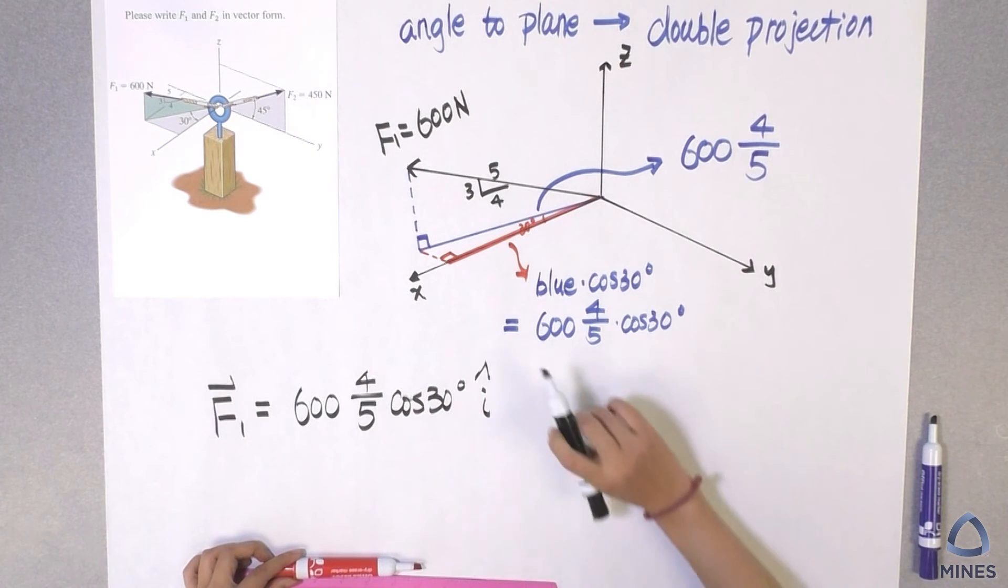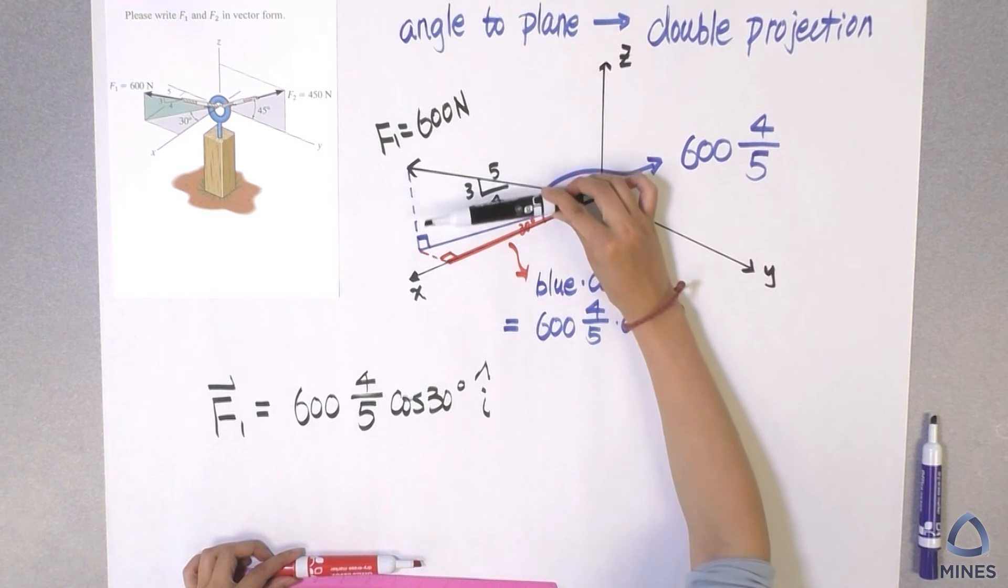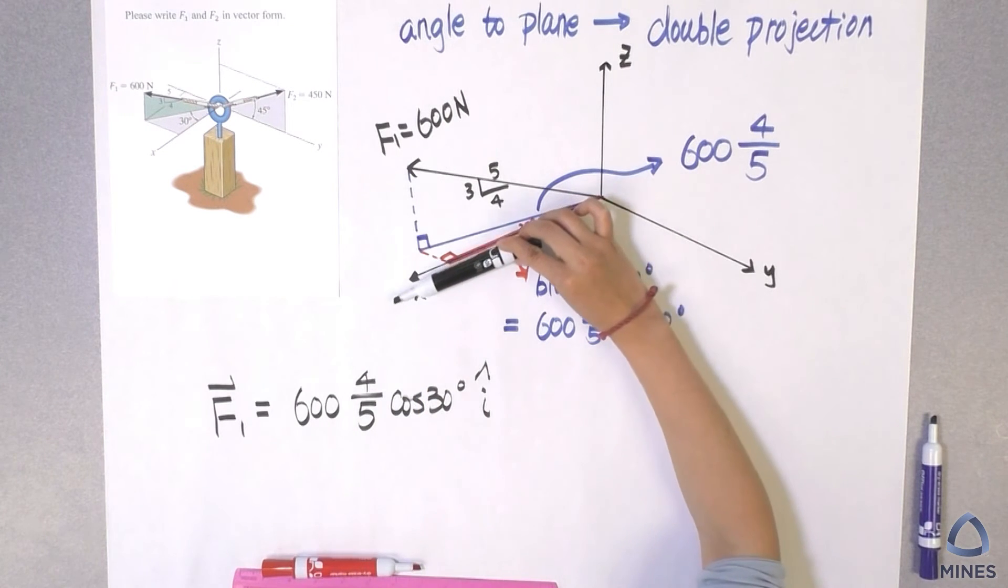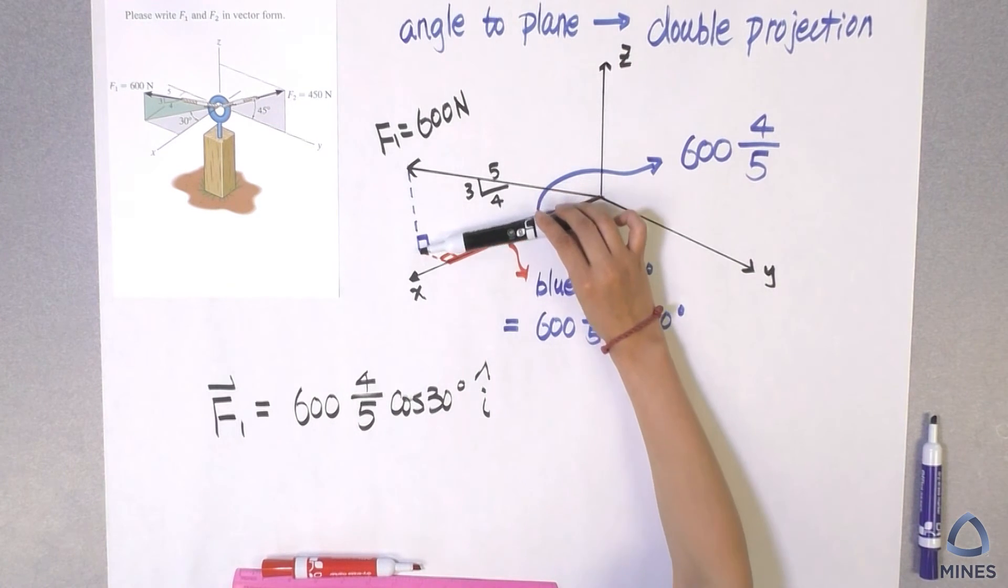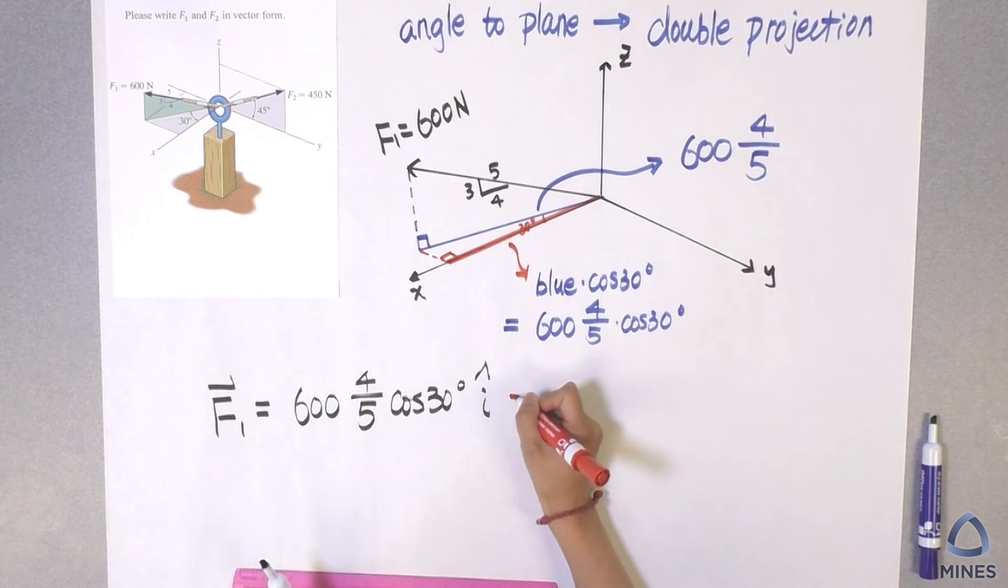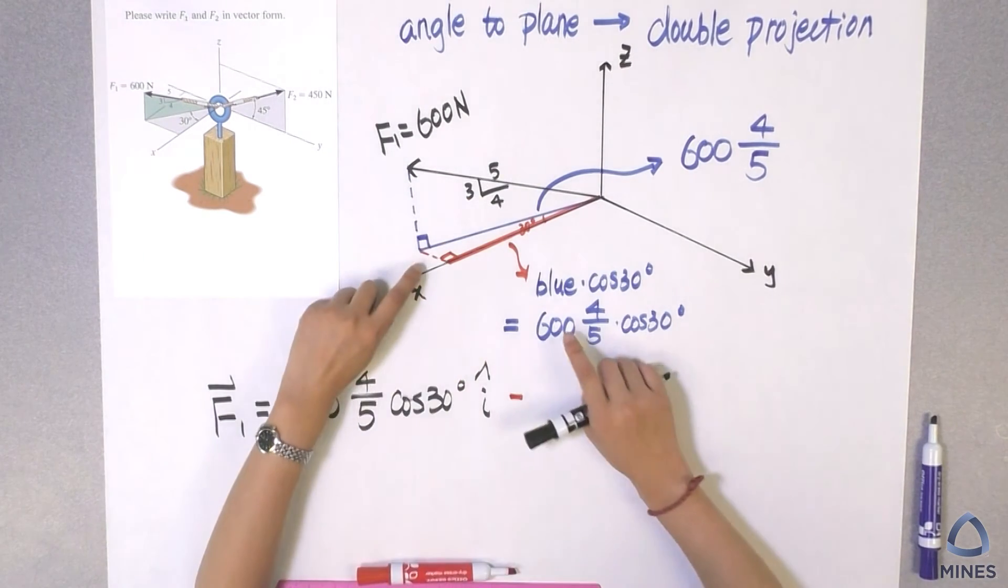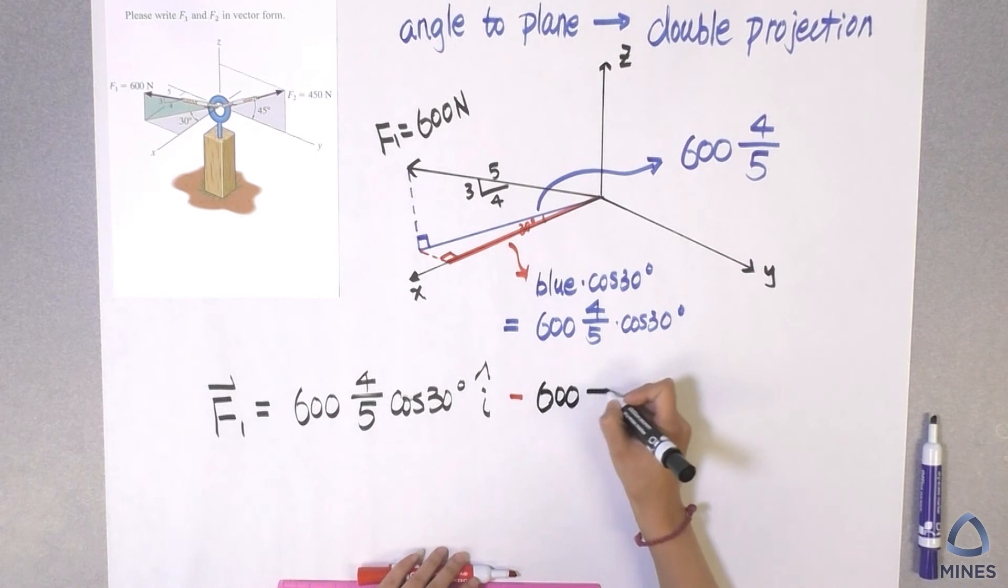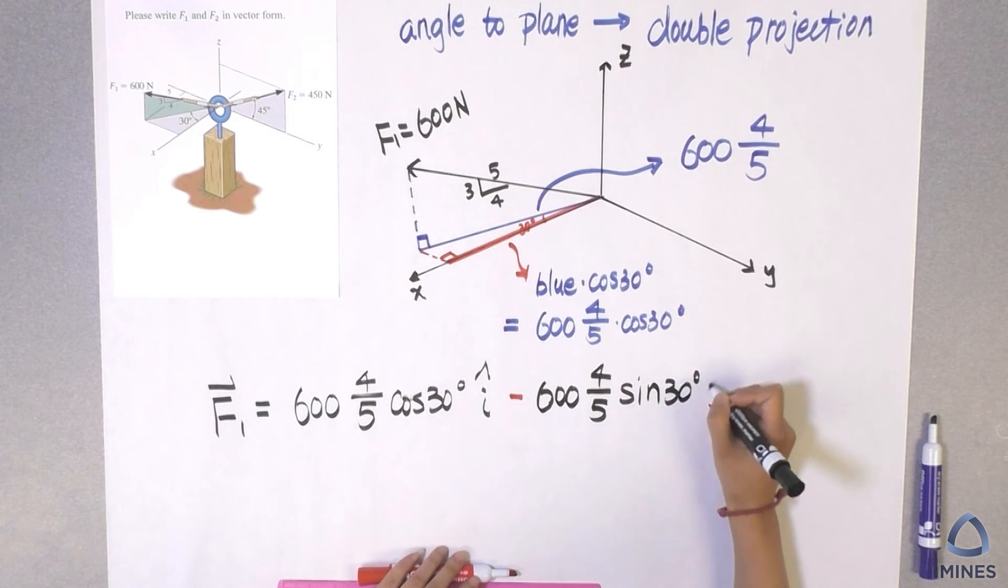So what is the j hat? It's actually going to be the red dashed line here. So we have to watch one more thing. When we project from here to the blue line, and then when we project to the X axis, my tip of the pencil going in the positive X direction. So we don't need to add negative sign. However, let's take a look at here. If we were trying to project to the Y axis here, you can see your arrow actually going to the negative direction of the Y. So that's why it must be negative. Then what is the value for this red dashed line? It will be the blue line here multiplied by sine 30. So the length of the blue line is going to be 600, 4 over 5, sine 30 degree. So that's the j hat.